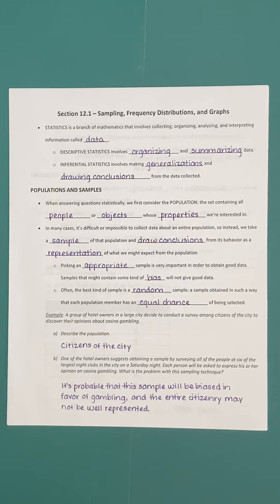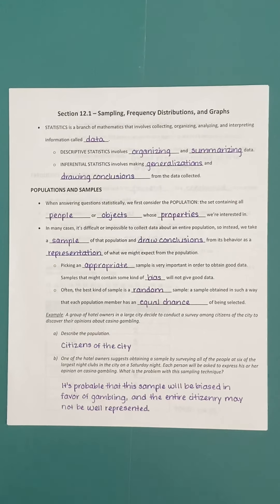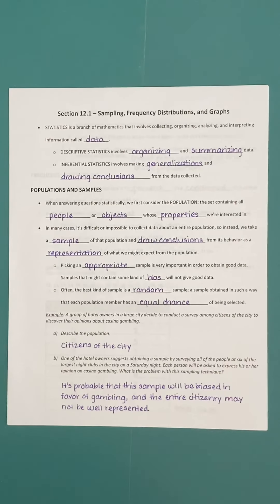The problem is that the sample in this case may be inherently biased in favor of gambling. If the idea is to get an accurate representation of what the whole city's citizens actually think, we've really selected a very specific category within that population. By focusing our sampling technique on such a small and specific group, we've eliminated the random component of it and we're probably not going to get the best data. This sample will potentially be biased in favor of gambling.